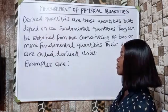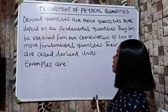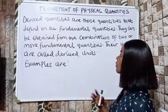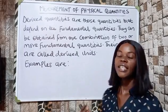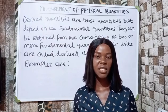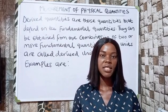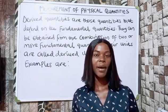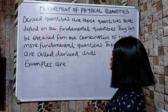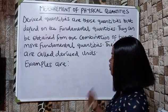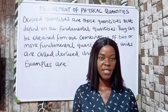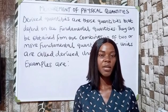Derived quantities are those quantities that depend on the fundamental quantities. They can be obtained from the combination of two or more fundamental quantities. Their units are called derived units.